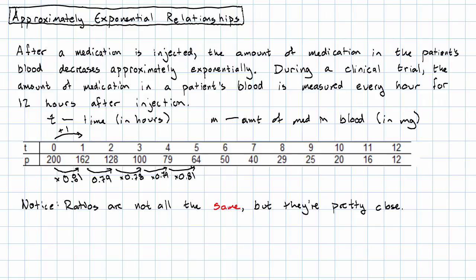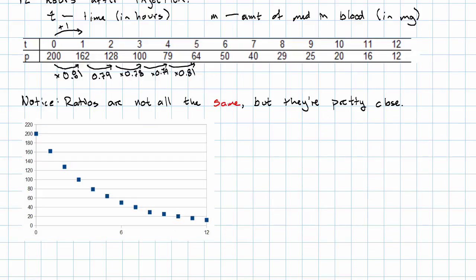We notice the ratios are not all the same, but they're pretty close. And if we look at a scatter plot of these numbers, we see that this sure looks like an exponential graph. It looks like the common ratio is about 0.8.